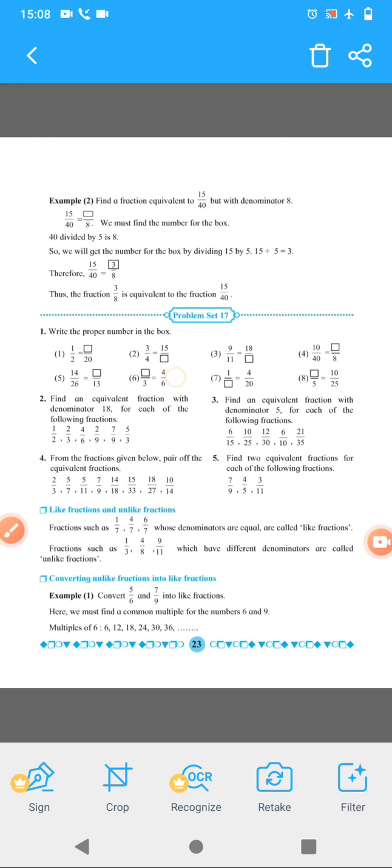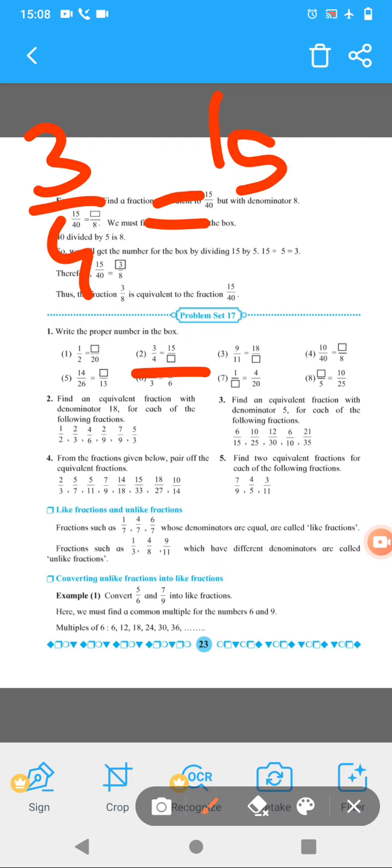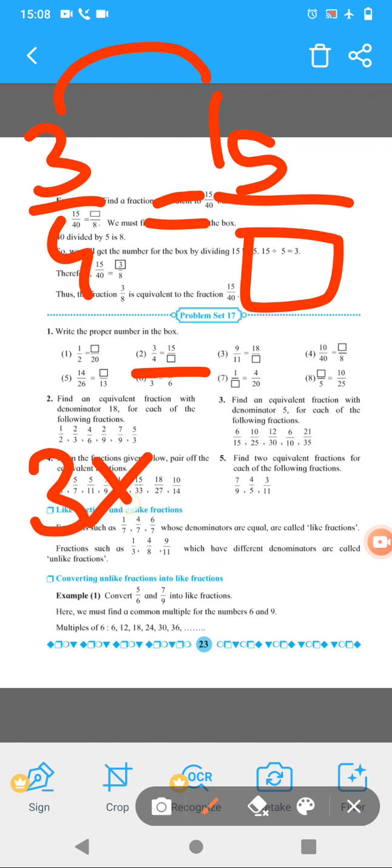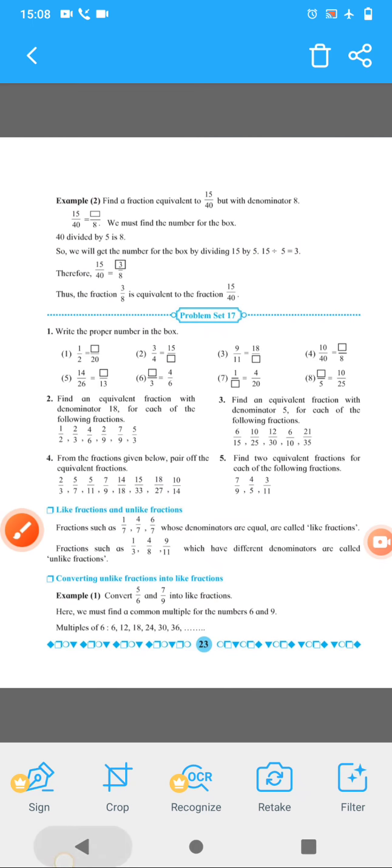So we'll see one more example. So this one example. Example number 2. 3 upon 4 is equal to is equal to 15 or here is given box. So 3 ke table mein 15 kaunse number pe hai? 3 5s are 15 so 4 ko bhi 5 se multiply karna hai. 4 5s are 20, the answer is 20. It is very easy.